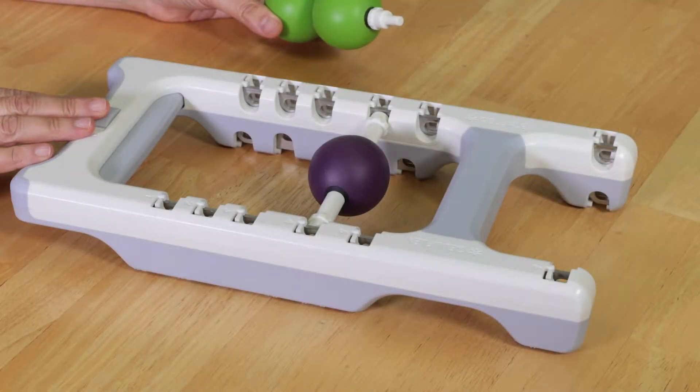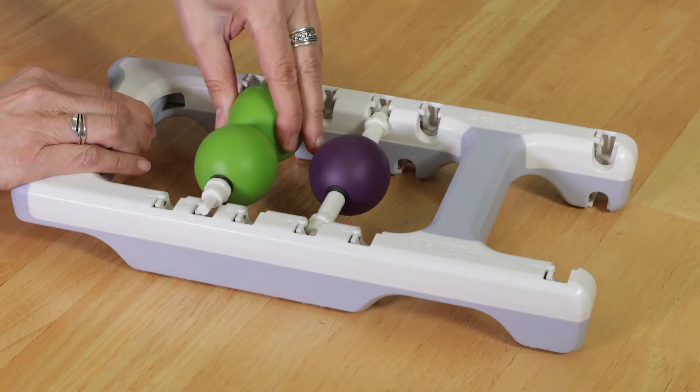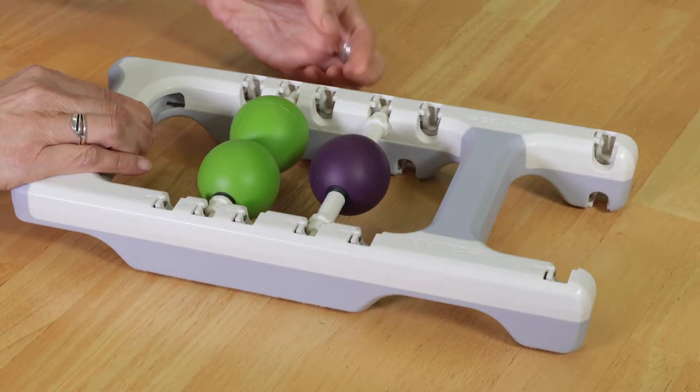To set up your abacus for the elbow roll, place your ball assemblies in two slots with one open slot left between them.